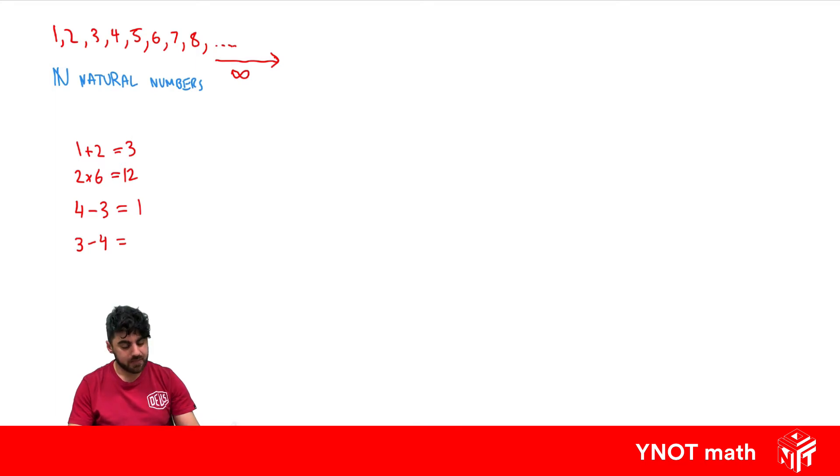Because we know 4 minus 3 is 1. And a nice way to think about subtraction, and even addition, is with money. So if you had $4 and someone took $3 off you, you'd be left with $1. And if you had $3, and someone wanted to take $4 from you, you could only give them $3. But then you'd owe them $1. And a way we can represent that with numbers is with minus 1. You'd have minus $1 because you'd owe them.